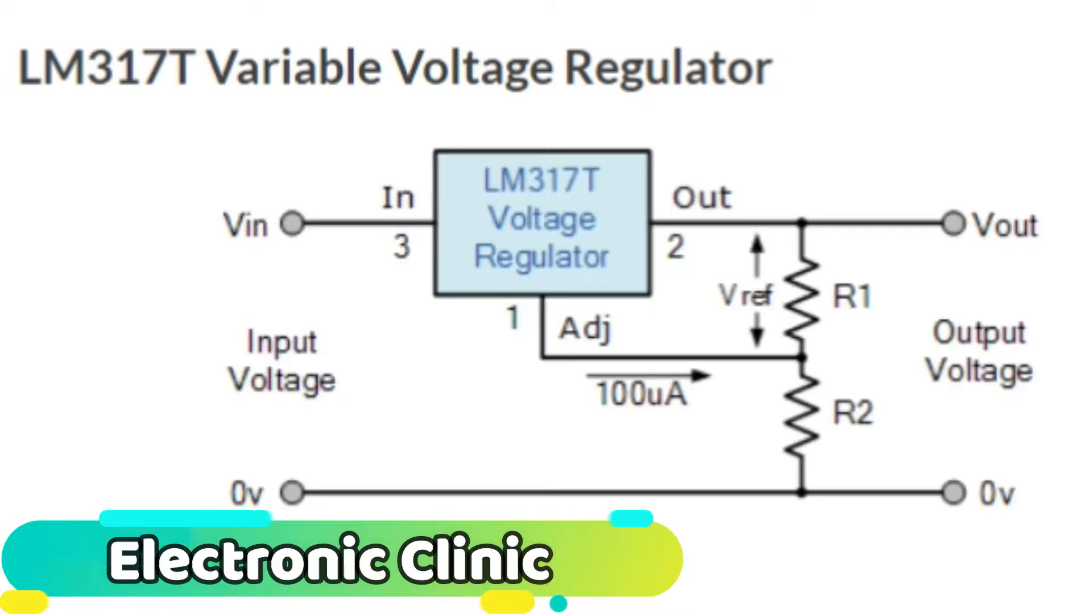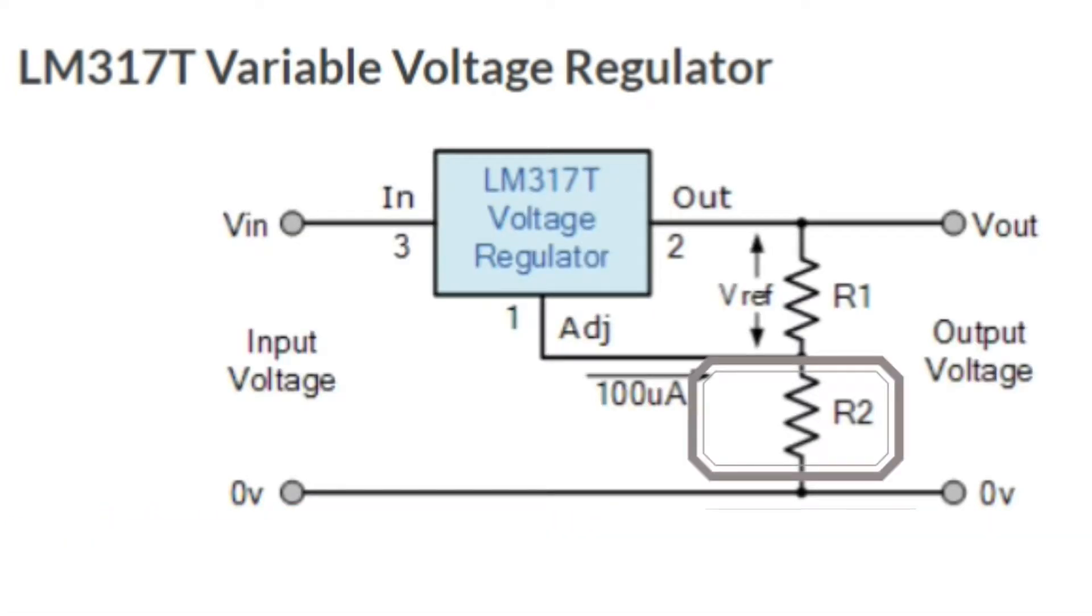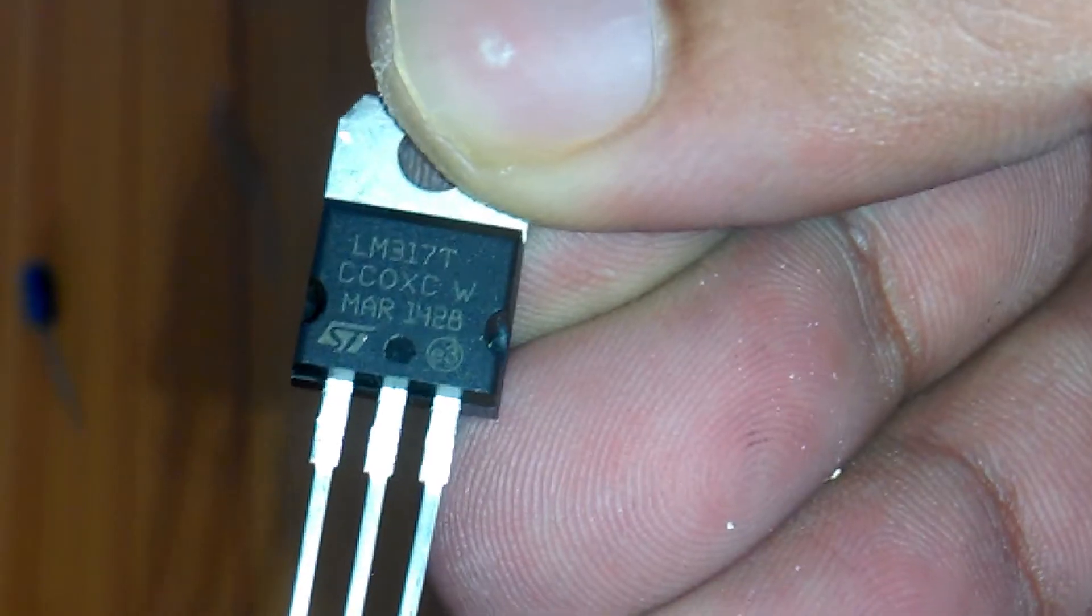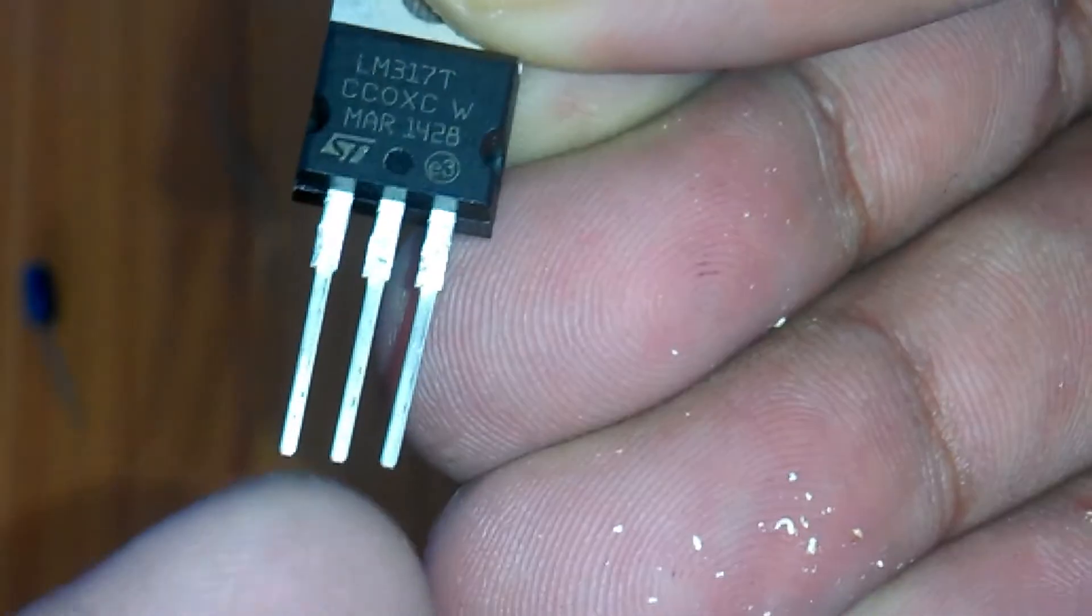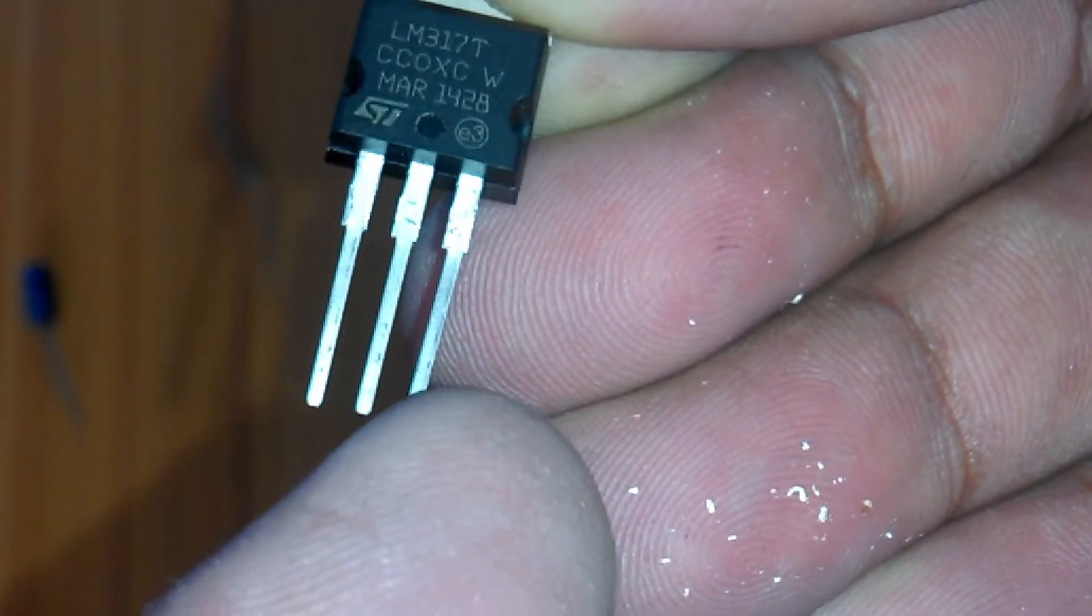Of course, in practice, resistor R2 would normally be replaced by a potentiometer so as to produce a variable voltage. This is the LM317 voltage regulator. Pin number one is the adjust, pin number two is the output, and pin number three is the input.